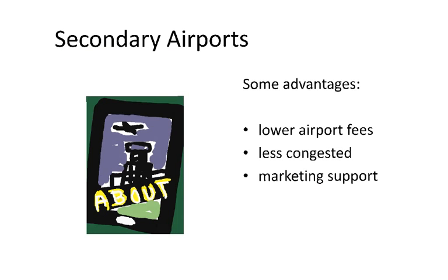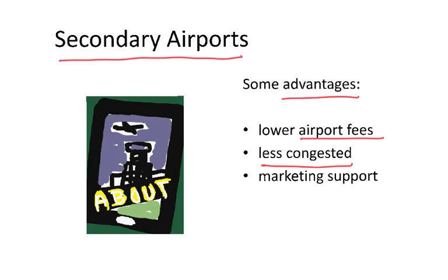Low-cost airlines tend to use secondary airports, which are not the main airports of the city. This has several advantages. Very often they pay lower airport fees. Those airports tend to be less congested, so there are fewer problems with waiting times as in big airports. Those airports also often try to attract low-cost airlines and are willing to provide marketing support when a new route is launched or a new base is established.